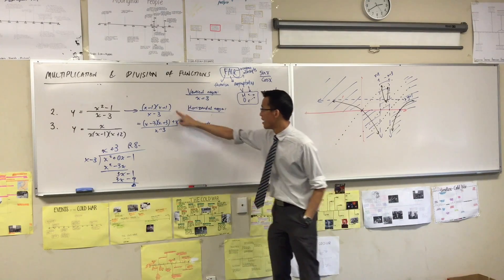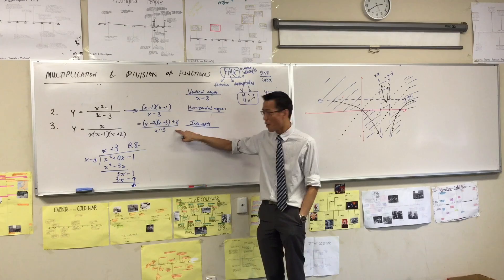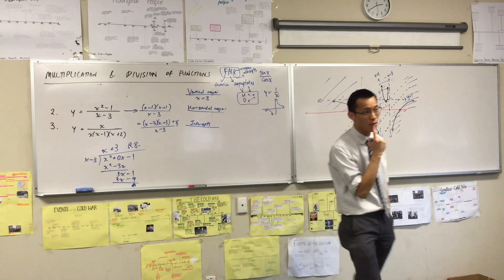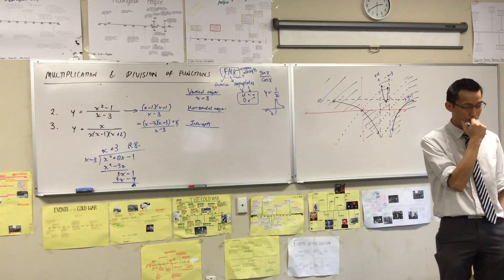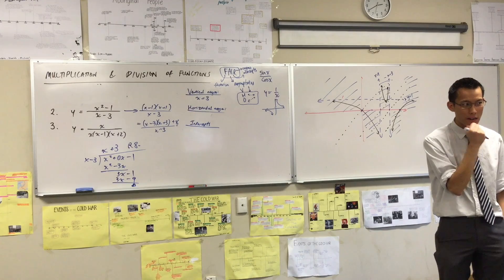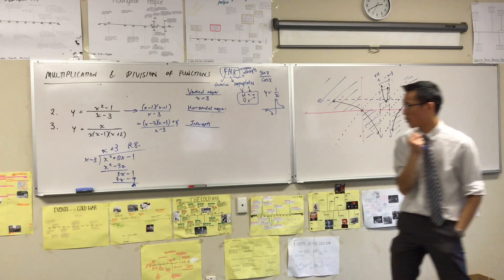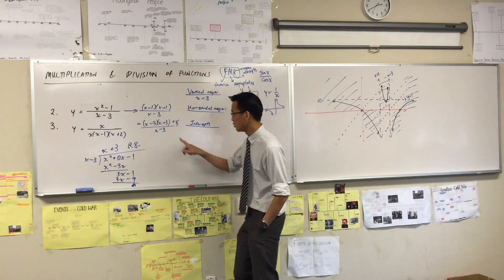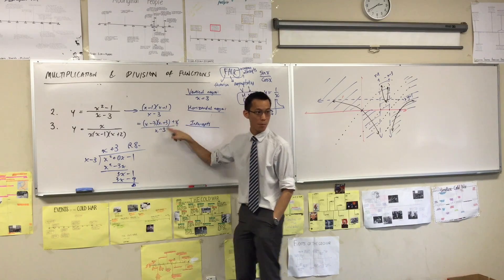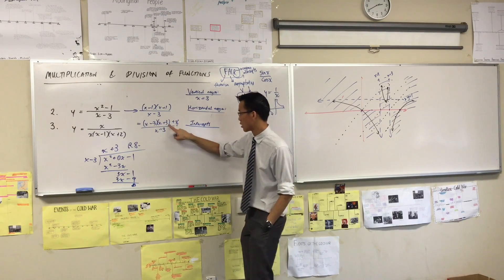Now when you compare this versus this you're like why on earth would you write it like this? Can you see why? What am I trying to find? I'm trying to find an oblique asymptote. Now let me try and make it a little more obvious to you. This is two things on the top divided by the same thing.